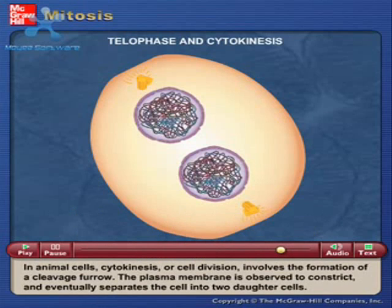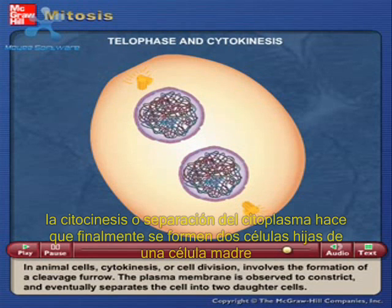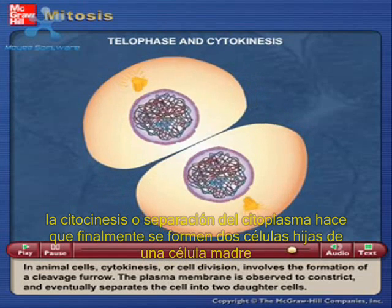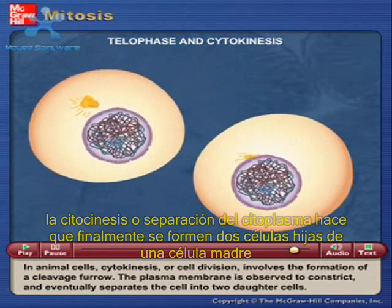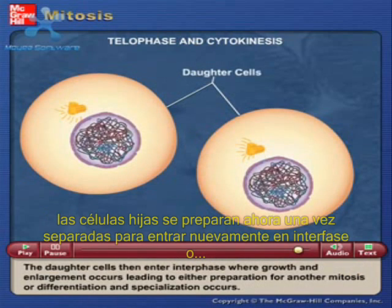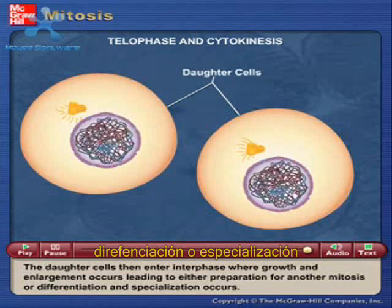In animal cells, cytokinesis or cell division involves the formation of a cleavage furrow. The plasma membrane is observed to constrict and eventually separates the cell into two daughter cells. The daughter cells then enter interphase where growth and enlargement occurs, leading to either preparation for another mitosis or differentiation and specialization.